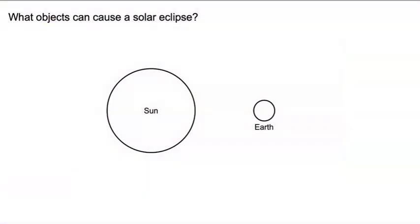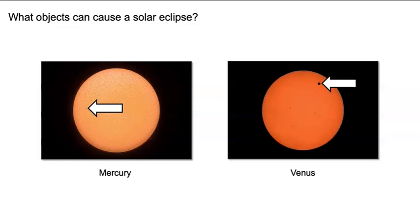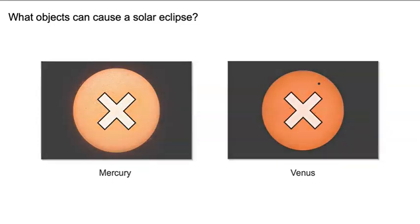In our last lesson, we began to explore the question: what objects can cause a solar eclipse? We figured out that to cause a solar eclipse, an object must pass between Earth and the sun and block light and thermal energy from the sun so that the sun's energy does not reach Earth. We learned that Mercury and Venus both pass between Earth and the sun, but when we looked at photographs of each of these planets between Earth and the sun, we figured out that neither of these planets can cause a solar eclipse.